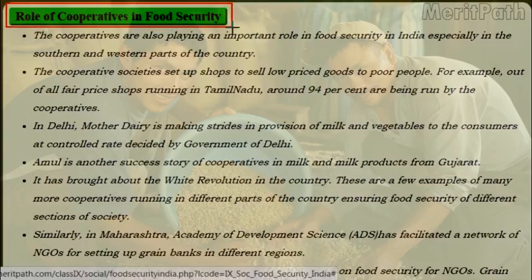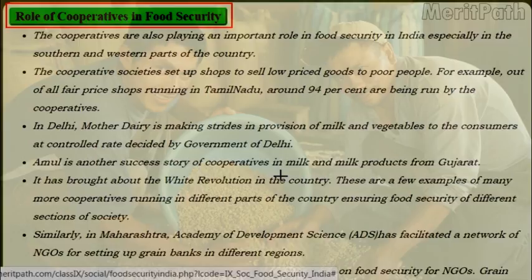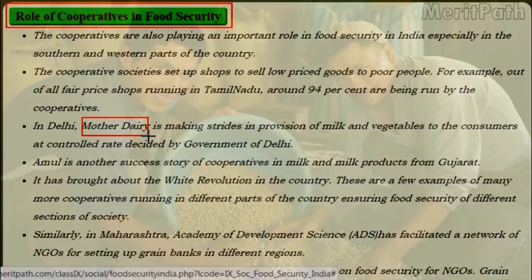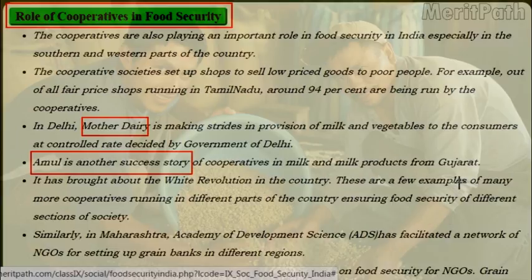Cooperatives also play an important role in food security in India, especially in the southern and western parts of the country. Cooperative societies set up shops to sell low-priced goods to poor people. For example, around 94% of fair-priced shops in Tamil Nadu are run by cooperatives. In Delhi, Mother Dairy is making strides in provision of milk and vegetables to consumers at controlled rates decided by the government. Amul is another success story of cooperatives in milk and milk products from Gujarat, having brought about the White Revolution in the country.